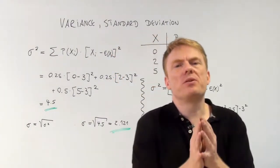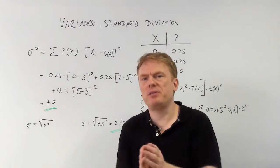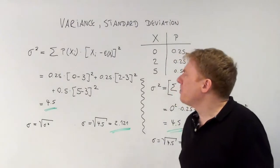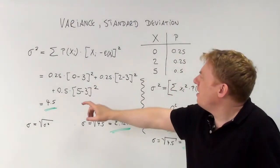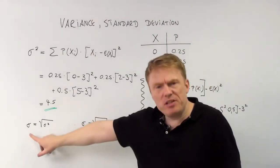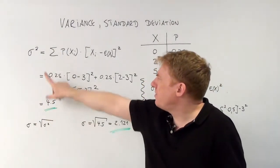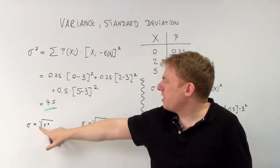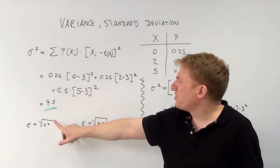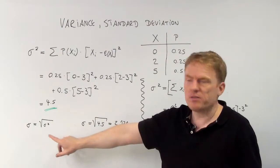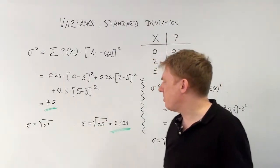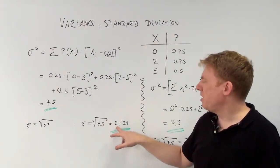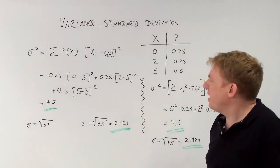Most random variables we consider have an expected value and a variance. The existence of the expected value is not guaranteed, but most have one. So the variance is 4.5. We denote the variance as σ² (sigma squared), and the standard deviation is denoted σ — the Greek symbol sigma. The square root of the variance is the standard deviation, so the square root of 4.5 equals 2.121.